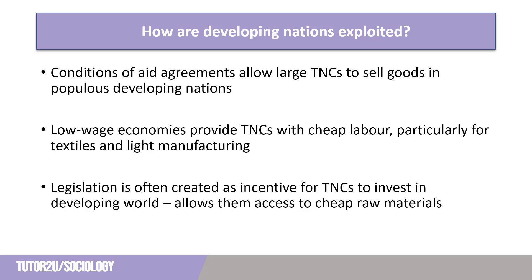Frank argued that this leads to exploitation of the developing world, and this is achieved through aid and trade. Developing nations are often given aid on the condition that they open their own internal markets to overseas goods without taxes or tariffs — this is called free trade. This benefits transnational corporations as they can expand the markets in which they sell their goods, allowing them to generate more profit.